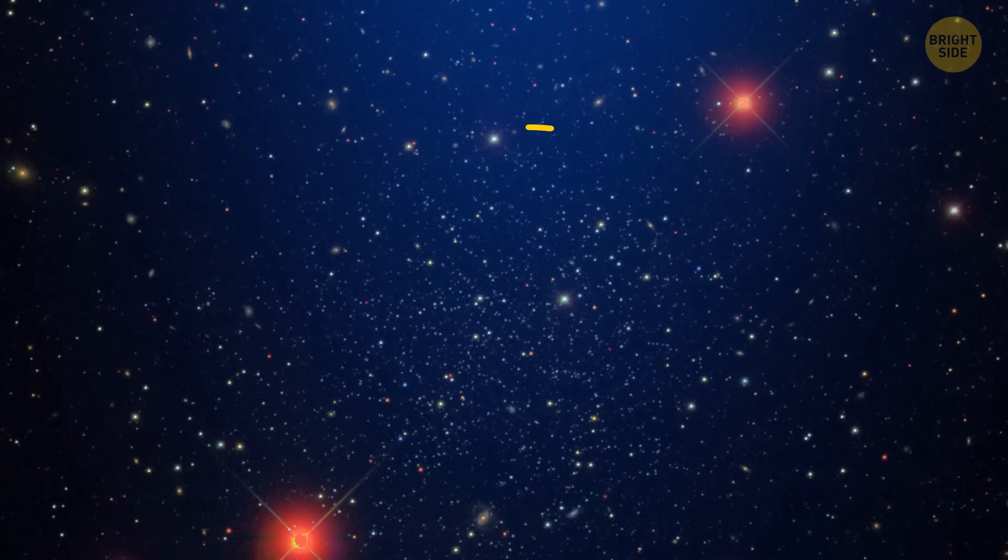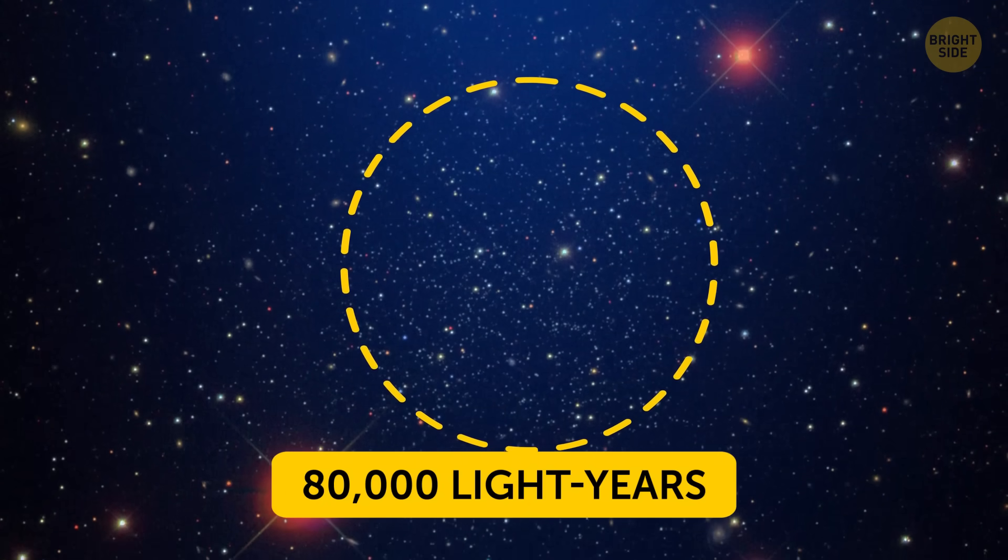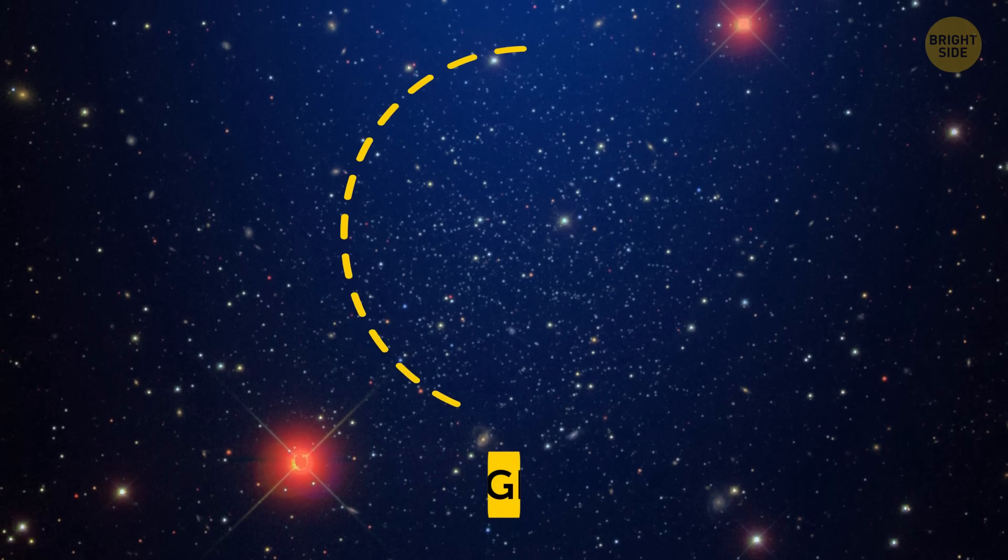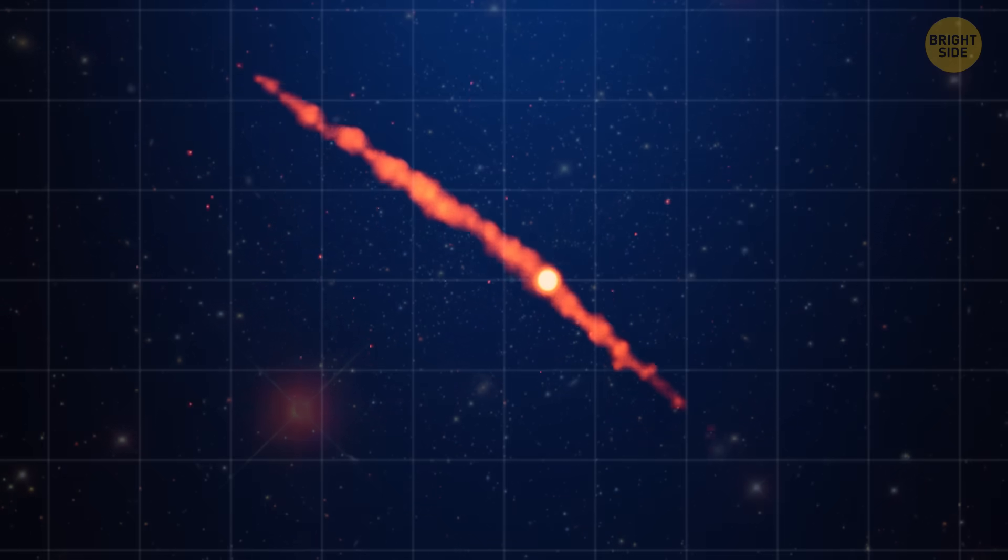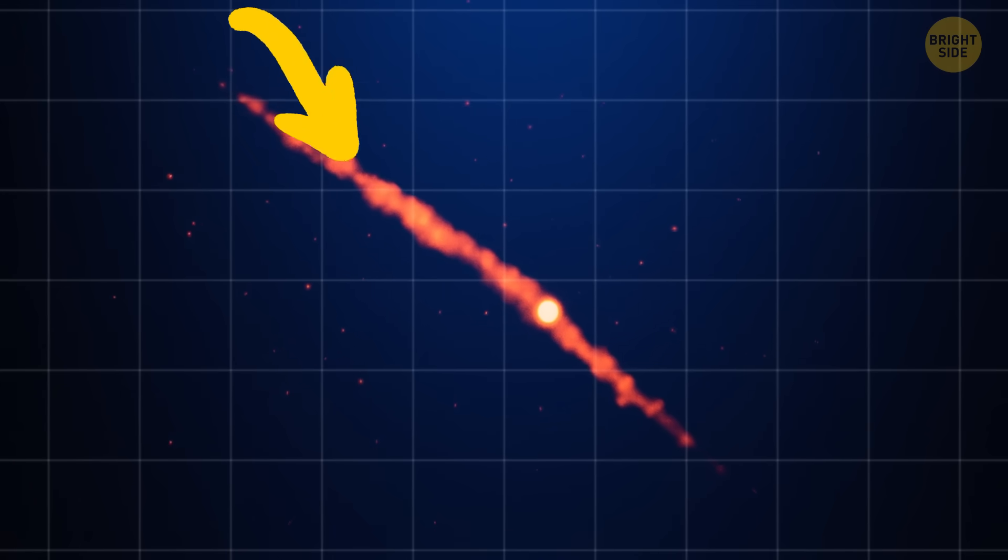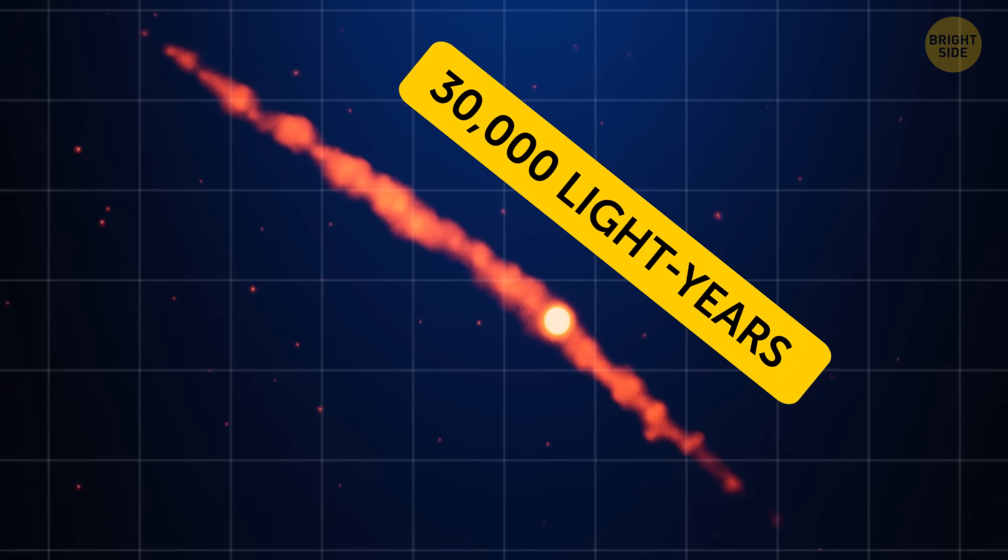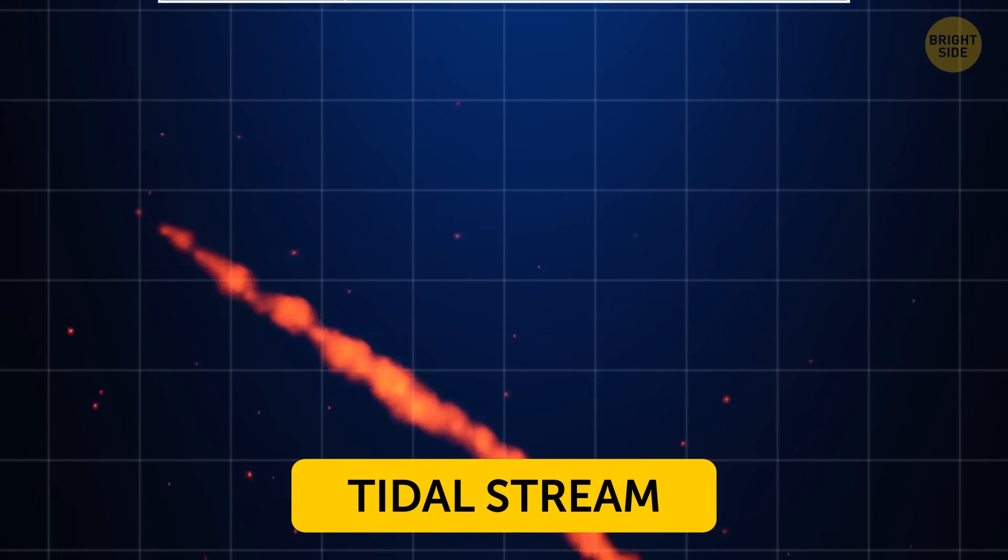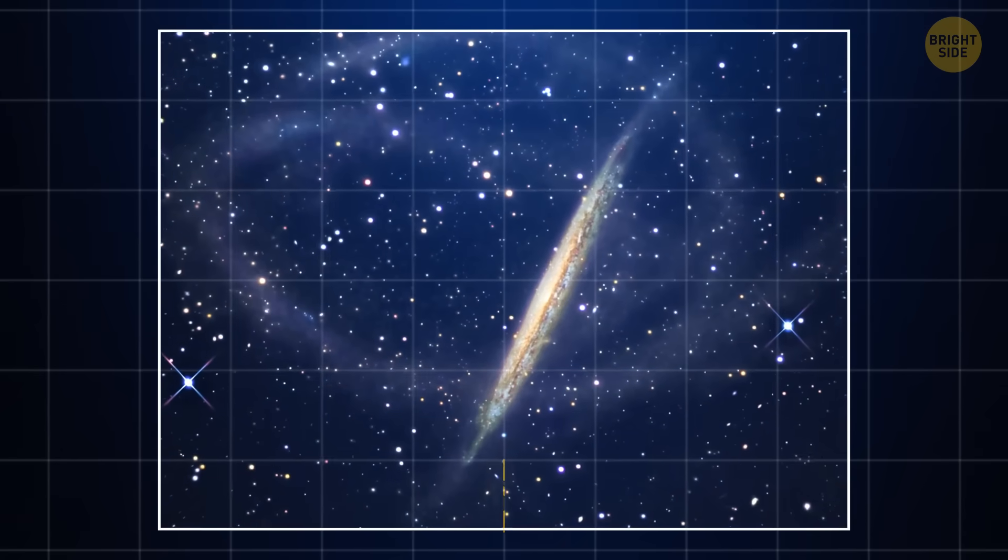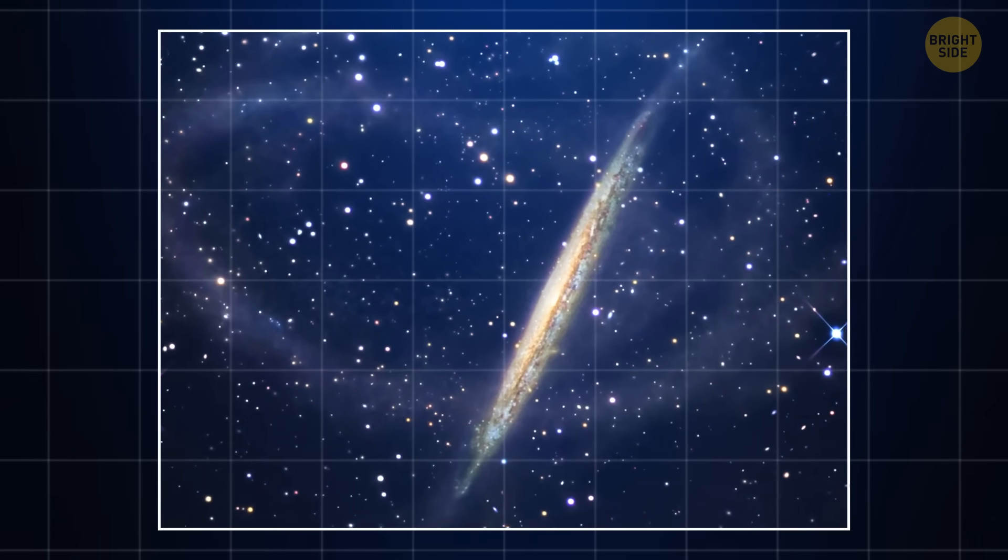Palomar 5 is a group of stars located about 80,000 light-years away from us. Normally, clusters like this are dense and tightly packed, with stars all bunched up together. But Palomar 5 is different. It's spread out and has a huge tail of stars, stretching across 30,000 light-years. This beautiful tail is called a tidal stream. It's like the stars are spilling out of the cluster, creating a long river of light. Tidal streams like this are rare and hard to study.